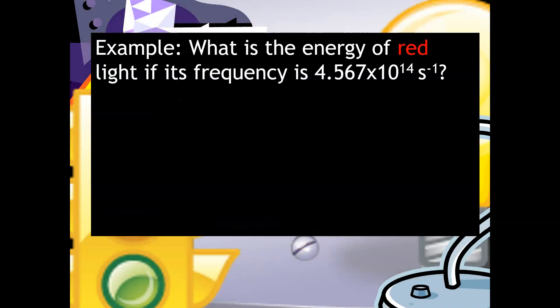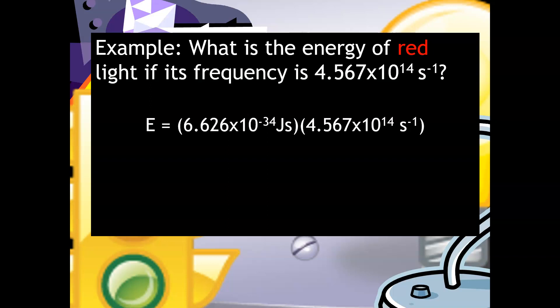So here's an example with this formula. What is the energy of red light if its frequency is 4.567 times 10 to the 14th reciprocal seconds. So again, we know that we're using E equals H nu. And so I plugged in that information. Again, that first number that you see there is called Planck's constant. It's never going to change. And then the second number that you see there is the number that's given in the problem.